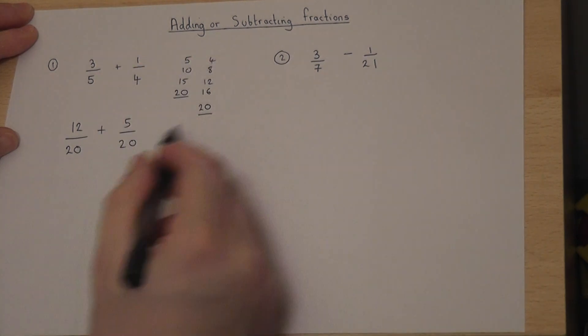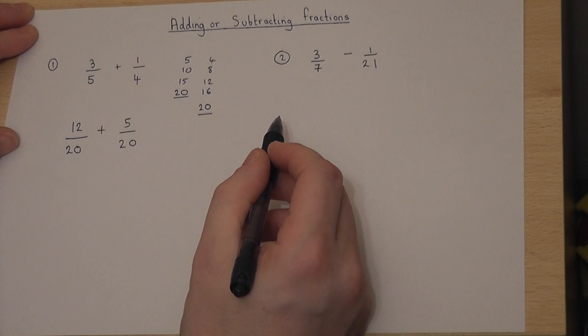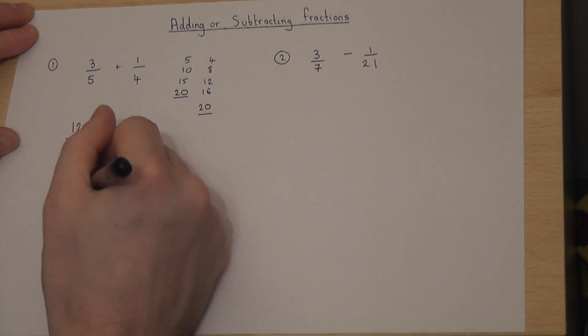Once I have the same denominator, I add the numerators. So the answer is 17 over 20.